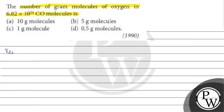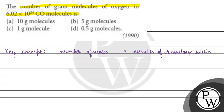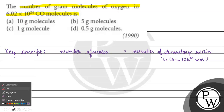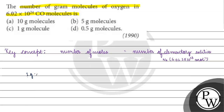The key concept for this question is: number of moles equals number of elementary entities divided by Avogadro's number. Avogadro's number is 6.022 × 10²³ mol⁻¹.